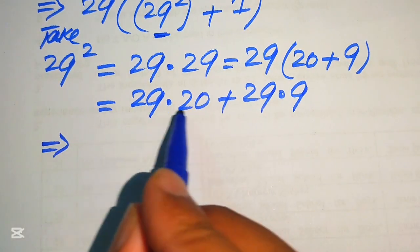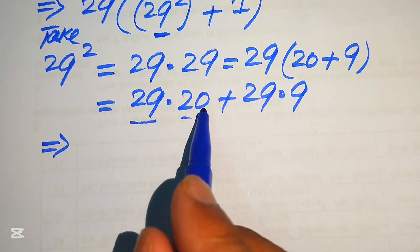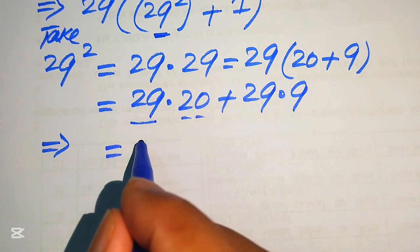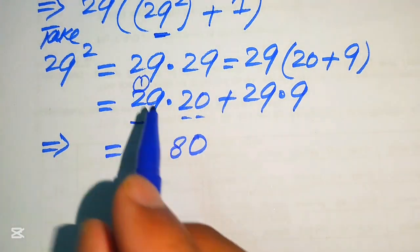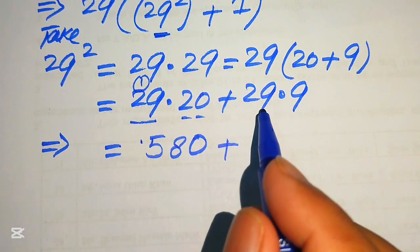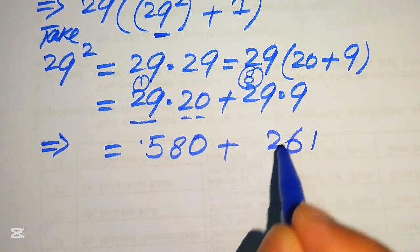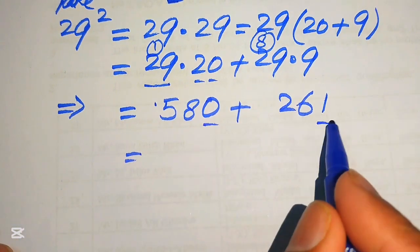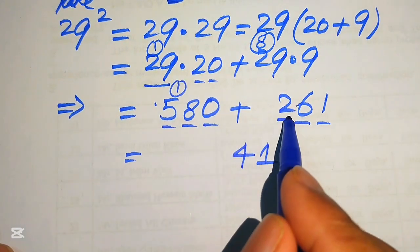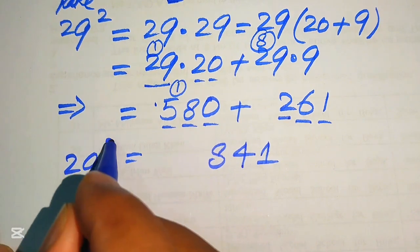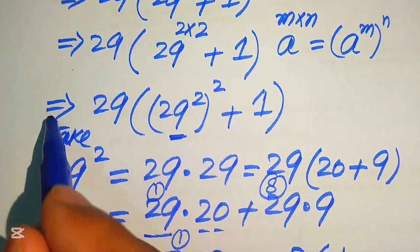We multiply 29 by 20: 0 times 29 gives 0; 2 times 29 gives 58, so 29 times 20 equals 580. Then 29 times 9: 9 nines are 81, write 1 carry 8; 9 twos are 18, plus 8 gives 26. Summing: 580 plus 261 gives 841. So 29 squared equals 841.